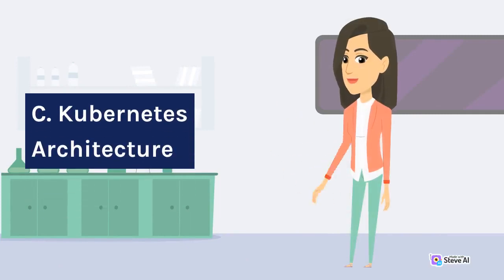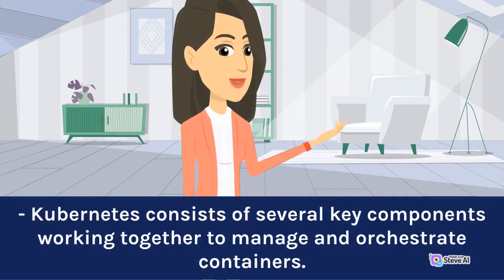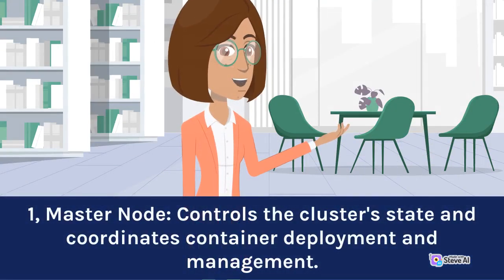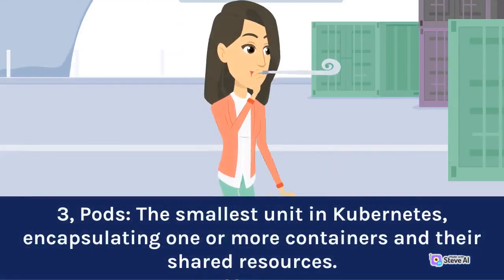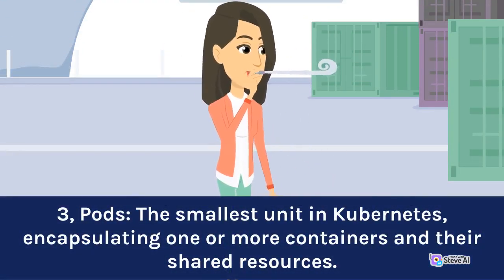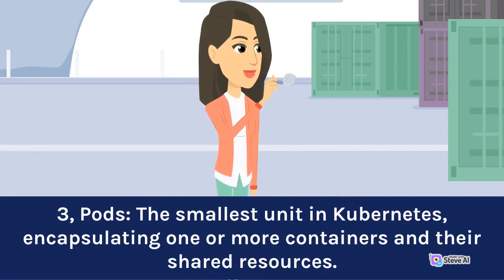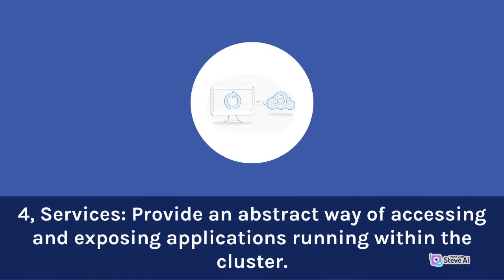Kubernetes architecture consists of several key components working together to manage and orchestrate containers. First, the master node controls the cluster state and coordinates container deployment and management. Second, worker nodes host the containers and run the workloads. Third, pods are the smallest unit in Kubernetes, encapsulating one or more containers and their shared resources. Fourth, services provide an abstract way of accessing and exposing applications running within the cluster.